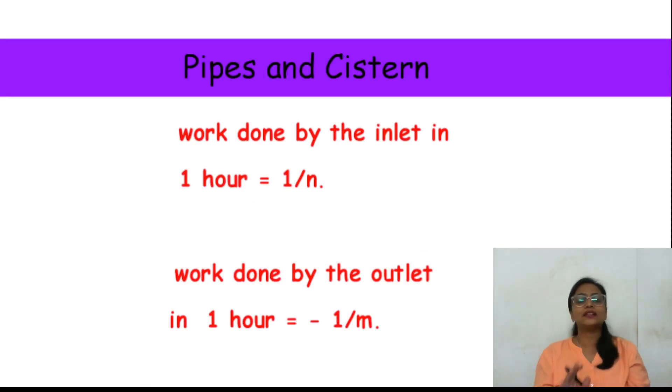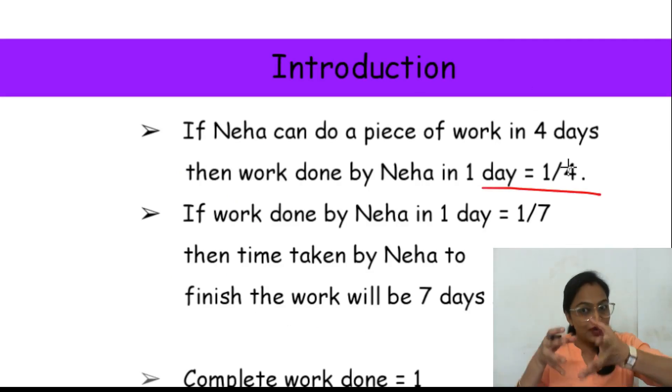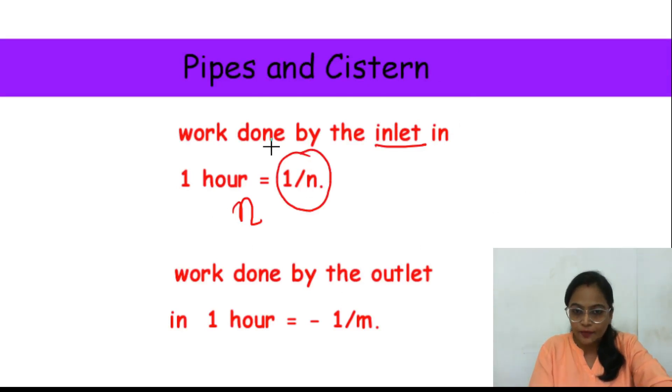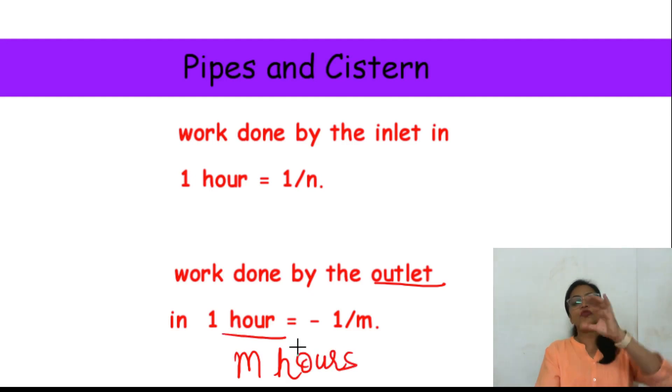Ab pipe and cistern ki baat karein, toh bhi same hota hai. Maan lijiye ki agar koi ek inlet pipe hai, matlab pipe jo paani bharta hai, thik hai? Woh n hours mein bharta hai paani. Thik hai? Toh 1 ghante mein kitna bharta hai woh paani? Yaha pe days ki baat ho rahi hai, aap pipe and cistern ki case mein, hours ki baat hoti hai. Thik hai? Toh 1 hour mein kitna hoga? Iska reciprocal, that is 1 by n. Ho gaya, aur inlet pipe kya hota hai, jo pipe bharta hai, paani bharta hai jo pipe. Aur work done by outlet in 1 hour will be minus 1 by m. Ye kya hai? Aap dekhiye.